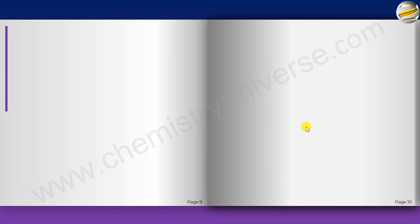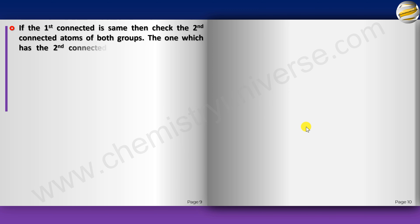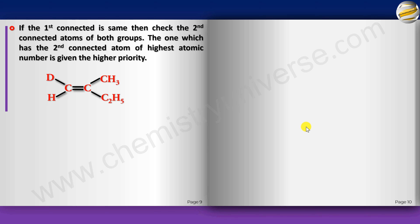If the first connected atom is the same but the atoms have different isotopes, the one with greater atomic mass gets higher priority — for instance, D (deuterium) gets higher priority than H. If the first connected atom is the same, check the second connected atom of highest atomic number in each group; the one with the higher atomic number second atom gets priority 1.